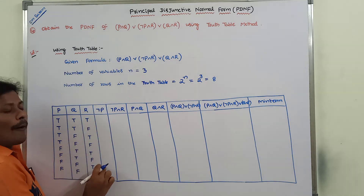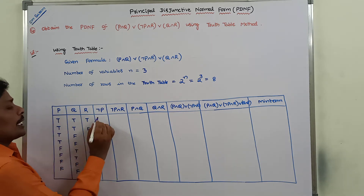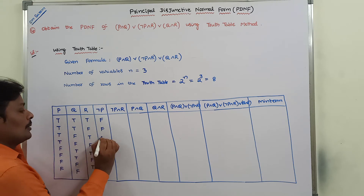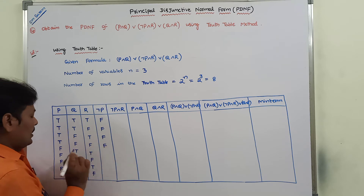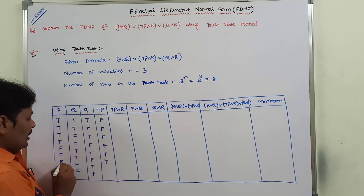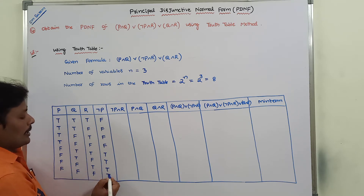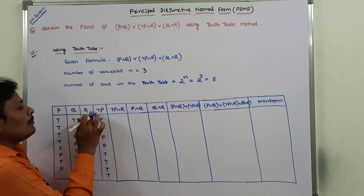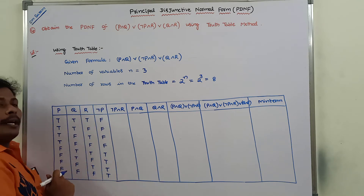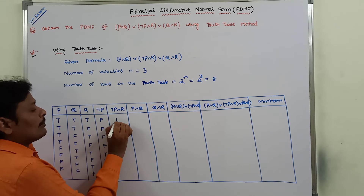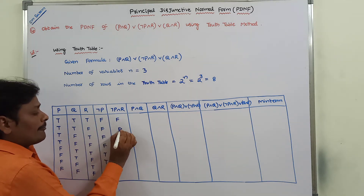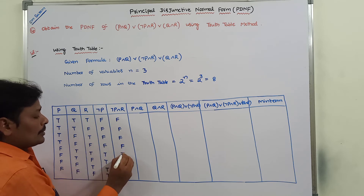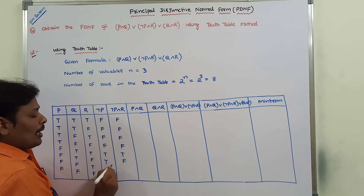Now we write the truth values of negation P. When P is true, negation P is false, and when P is false, negation P is true — this alternates for all eight rows accordingly. Next, for the column ¬P∧R, we combine the negation P column and R column using the AND connective. The resulting values are: false, false, false, false, true, false, true, false.